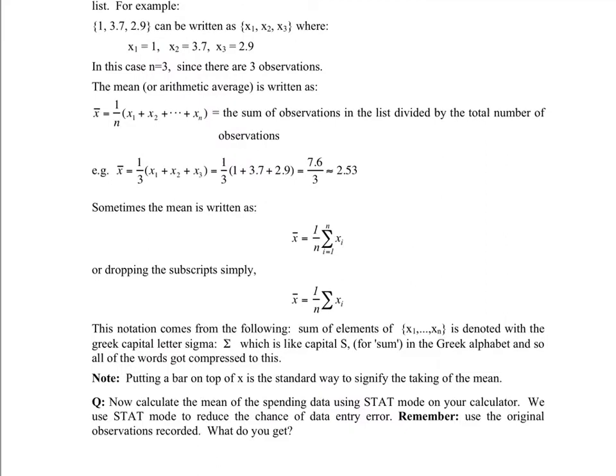In this case, 1 plus 3.7 plus 2.9 divided by 3 gives 2.53 approximately, because the real answer is 2.53333. So make sure you can compute that in your calculator.